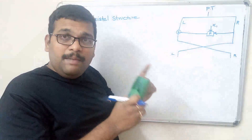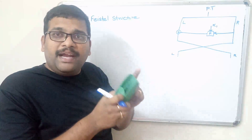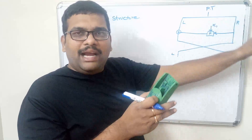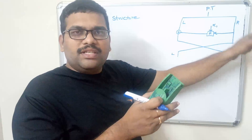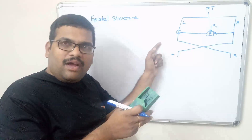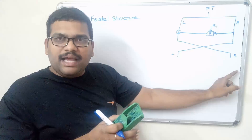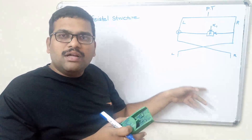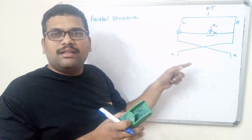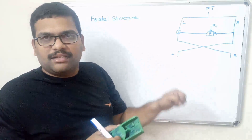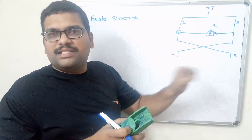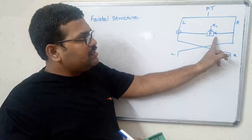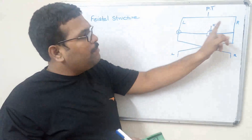In any algorithm, if the plaintext is divided into two halves, all the functions are applied on the right half, the result is XORed with the left half, then swapping is done, and this process continuously repeats in a number of rounds — then we call that algorithm a Feistel structure. The security mainly depends on the functions, the number of rounds, and the number of keys.